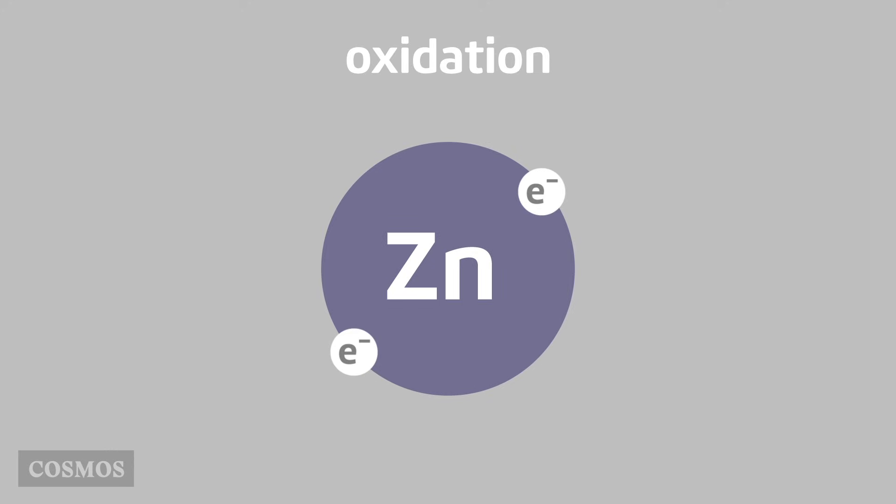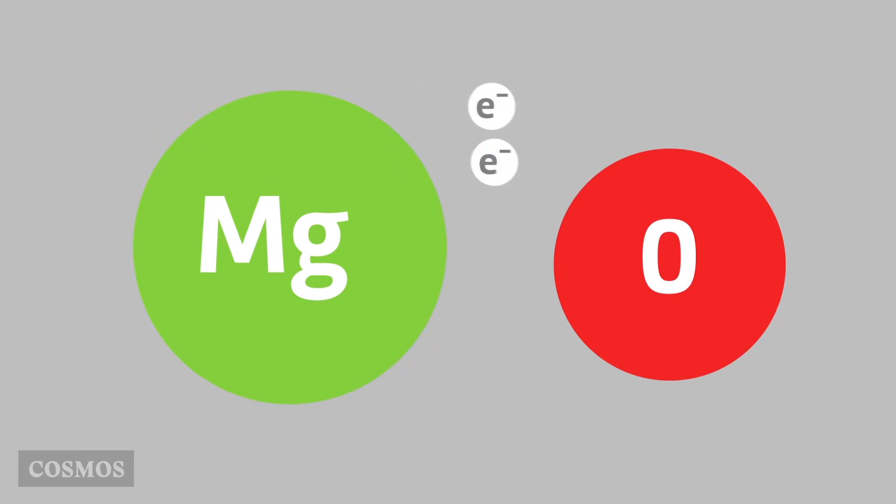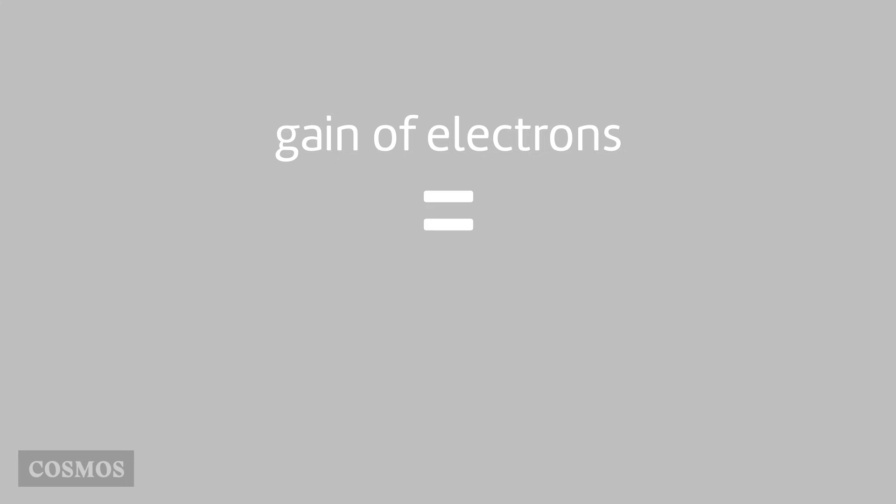This is an oxidation reaction too. The zinc has been oxidised because it lost electrons. But one atom's loss is another's gain. And gain of electrons is called reduction.